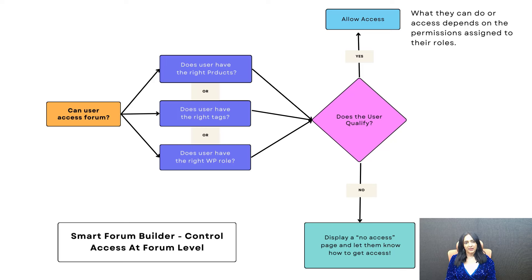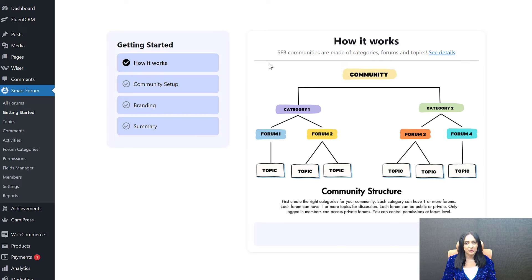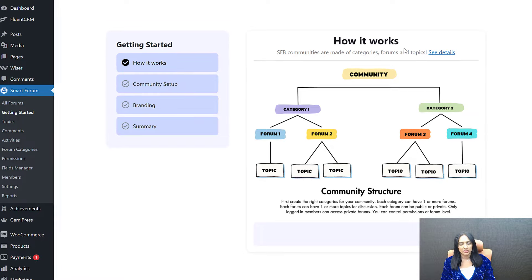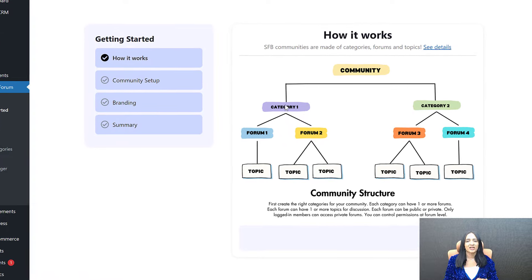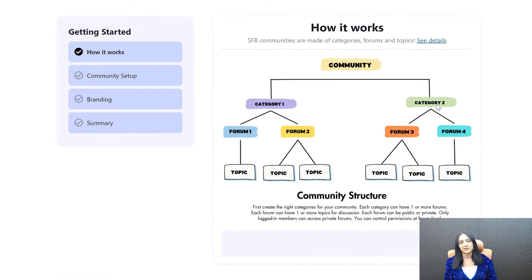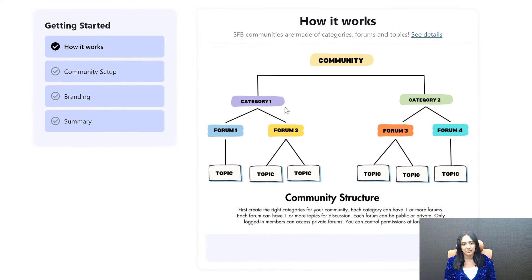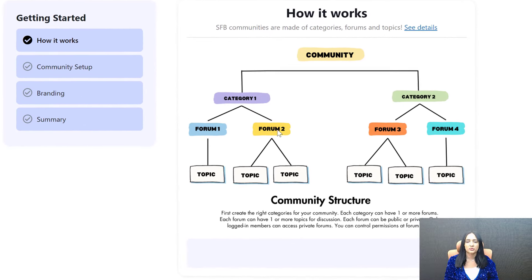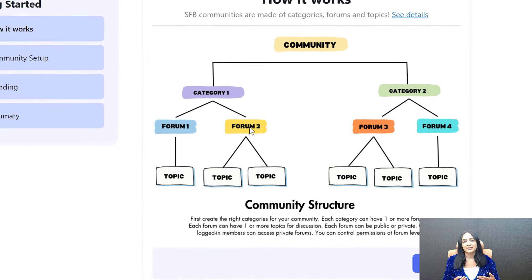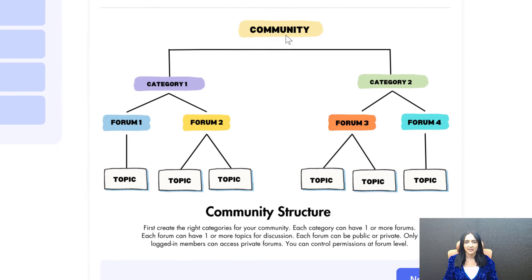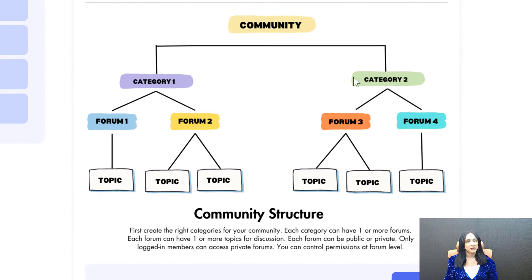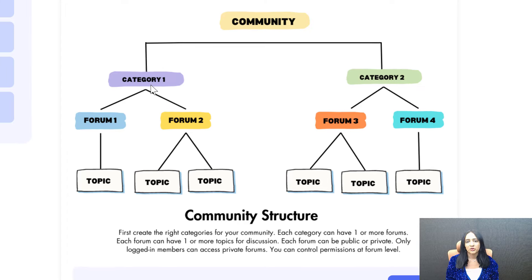Now let me show you what the front end looks like — the entire user experience — and I'll give you a quick demo of the back end. First, let me share some core concepts of how Smart Forum Builder works. At the very top is your community. Then you can create multiple categories — or just a single category with all your forums. The structure is built to be scalable, so in the future you can have different categories for different products and memberships.